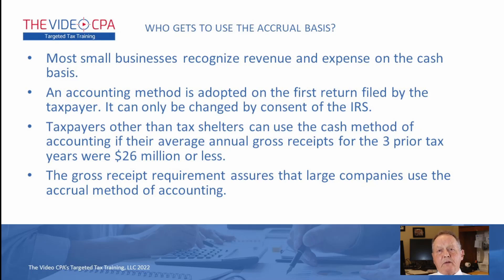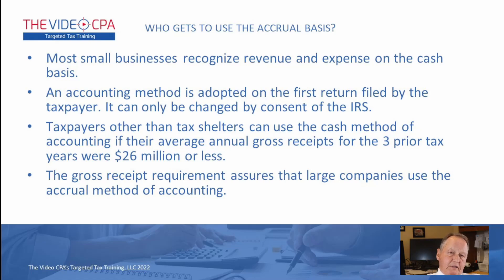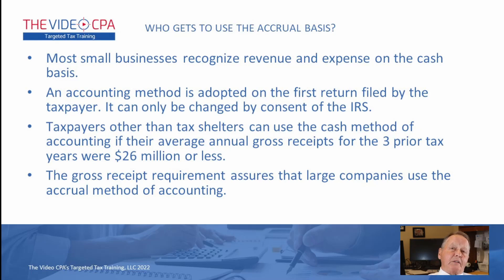If you file on the accrual method and want to change later, you can, but you have to file an accounting change form and get the IRS to approve it. If you're a small taxpayer they'll probably allow it, it just may take a long time. We mentioned last week that if you have a three-year average of $26 million or less in gross receipts, you can use the cash method. Anyone above that is required to use the accrual method.